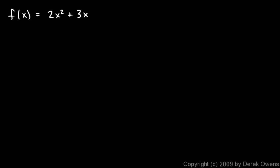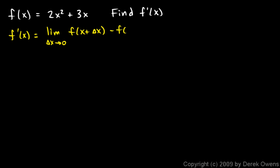Here's another example — we're going to find the derivative, f prime of x, for this function, and we're going to do this with the definition of the derivative. In just a bit we'll learn some shortcuts, but let's work it out using the definition. The derivative f prime of x is the limit as delta x approaches 0 of f(x + delta x) minus f(x), all over delta x. You should recognize this as a slope calculation — rise over run. Finding the derivative means finding the slope, and what we get is a function whose value at any point is the slope of the original function at that point.